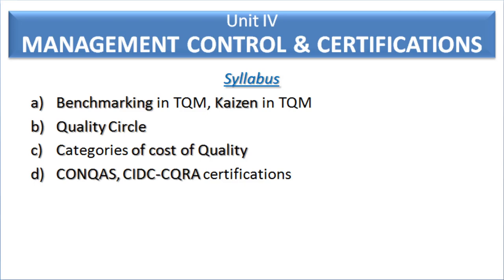Unit number four is management control and certifications. In this unit, students will be able to learn about benchmarking in TQM, what is kaizen, quality circle, then cost of quality, and certain certifications like Concast, CID, CQRA.